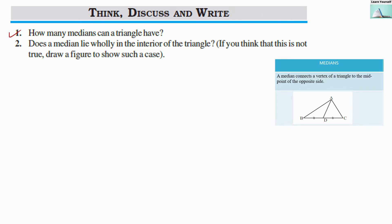How many medians can a triangle have? As we have discussed earlier, if this is a triangle, then each triangle will have three medians — from the vertex to the opposite side, from the vertex to the opposite side, and from the vertex to the opposite side.